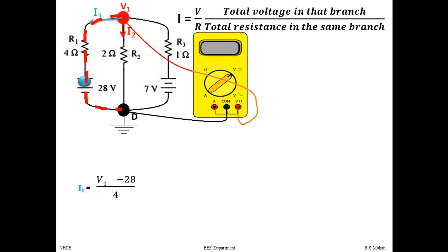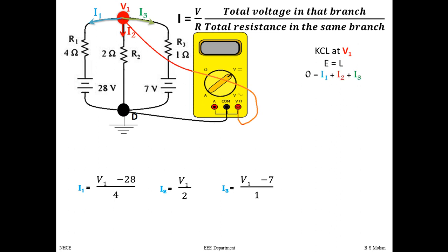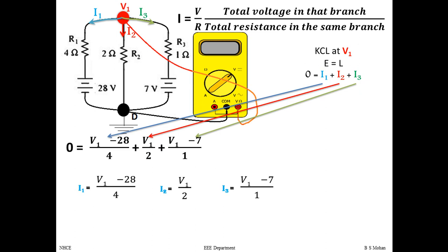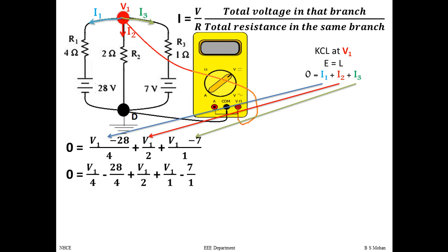For I2 in the second branch, there are no voltage sources, so I2 = V1 / 2. For I3 in the third branch, the current starts at V1 (positive) and hits the positive terminal of the 7V source first, so 7V is negative: I3 = (V1 − 7) / 1. Applying KCL at node V1: 0 = I1 + I2 + I3. Substituting the three expressions gives one equation with the single unknown V1.